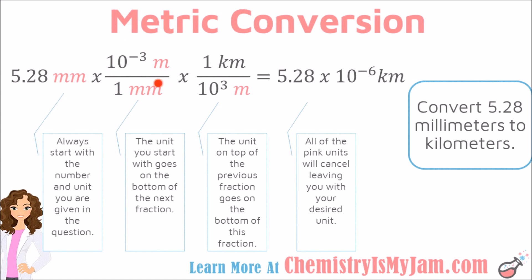Then I'm going to set up a conversion factor where I'm going to put whatever unit I started with here on the bottom of this conversion factor. So I had millimeters to begin with, I need millimeters to be on the bottom of this factor. I'm converting from millimeters, which has a prefix, to a base — I'm going to meters, which does not have a prefix. The conversion factor is 10 to the negative third, which was the definition of millimeter that we saw on the previous screen. So for every one millimeter, there's 10 to the negative third meters. If I were to stop the calculation right now, millimeters would cancel and I would have my answer in meters, but I want kilometers.